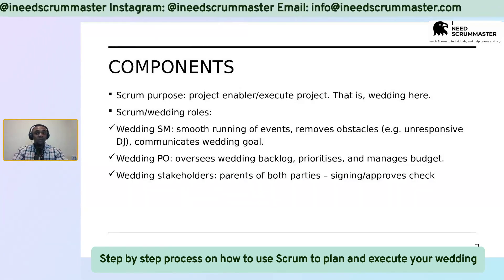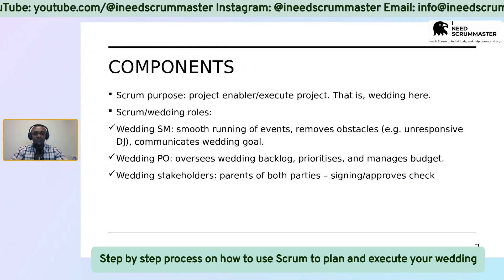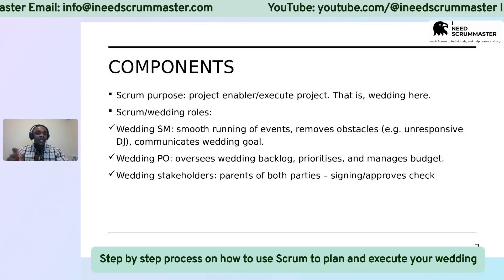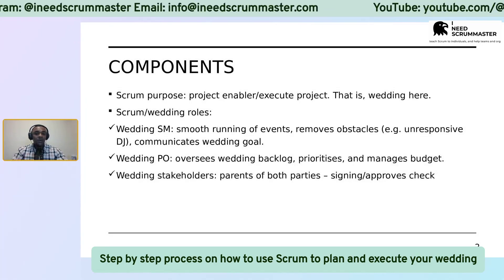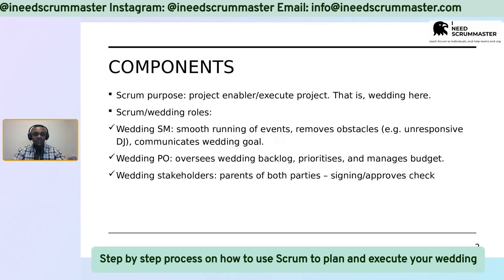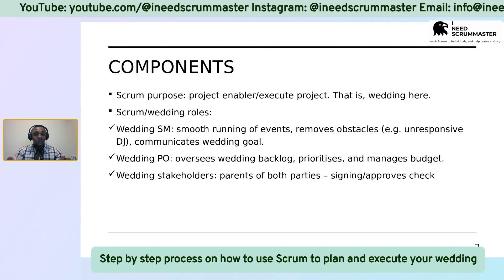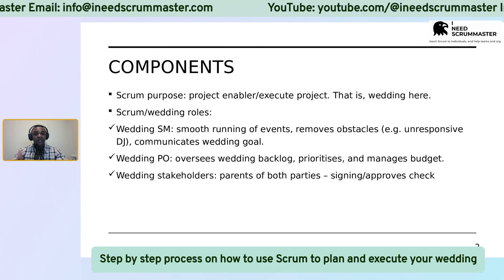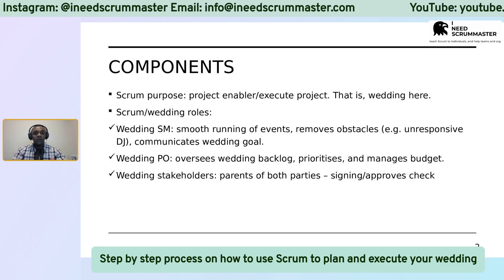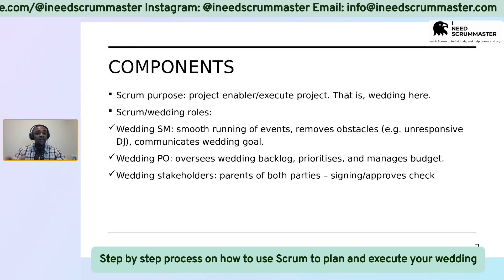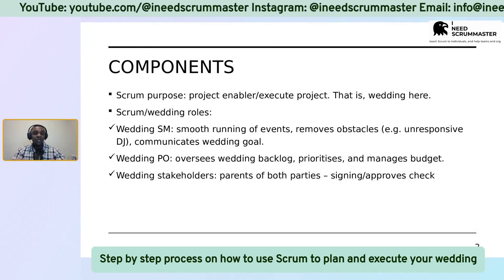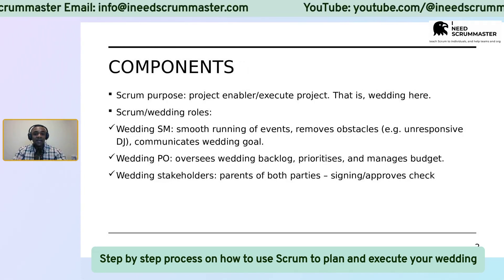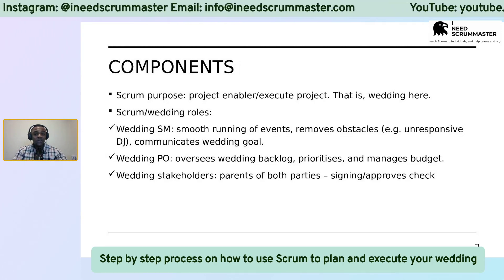Just like in software development, there are three Scrum accountabilities: the Scrum Master, the Product Owner, and the Development Team. However, in planning an event like a wedding we don't have developers and we're not writing any code. So the two major roles you could use in planning your wedding are the Wedding Scrum Master and the Wedding Product Owner — also called the PO. Today we'll talk about how these two roles can be used meaningfully in planning your wedding.